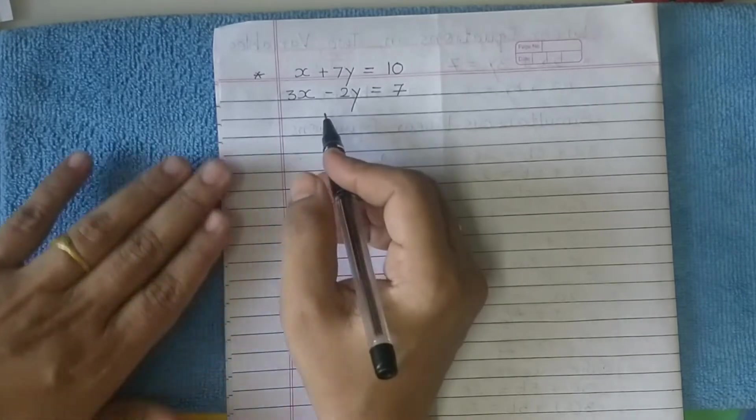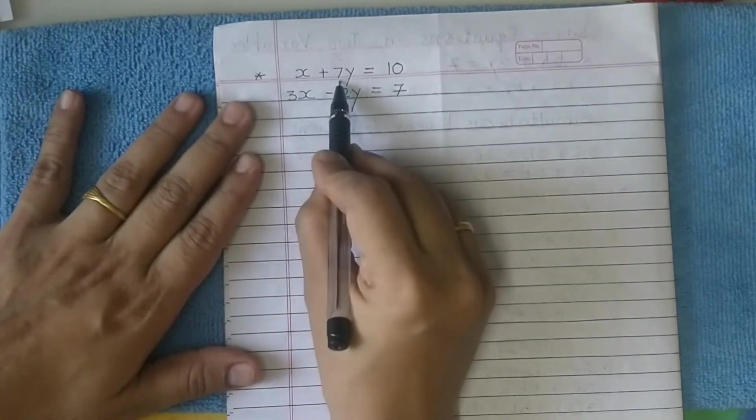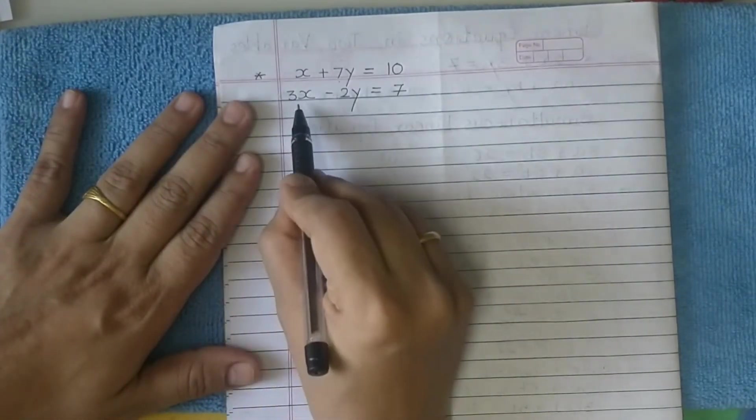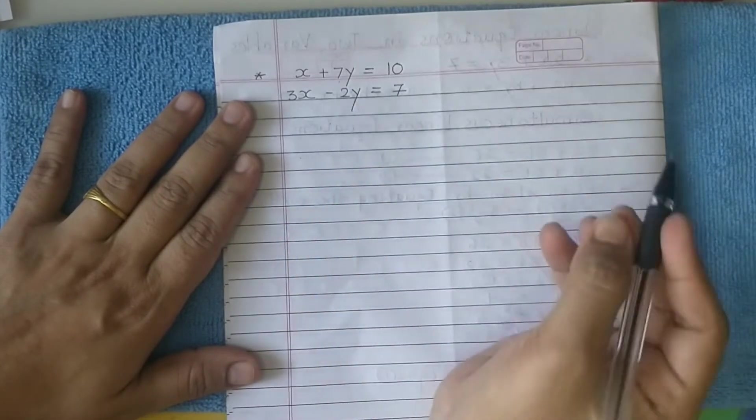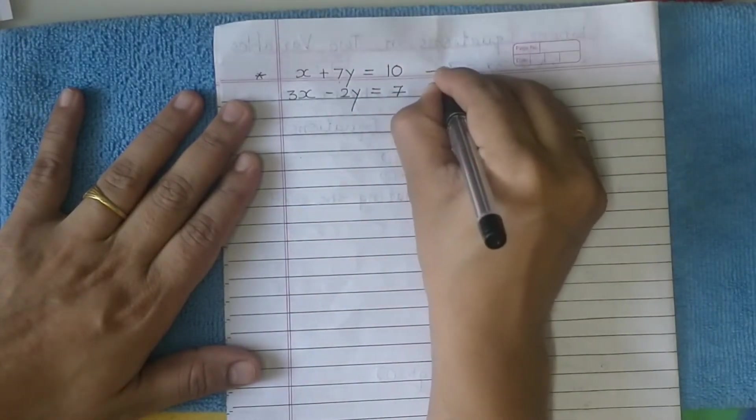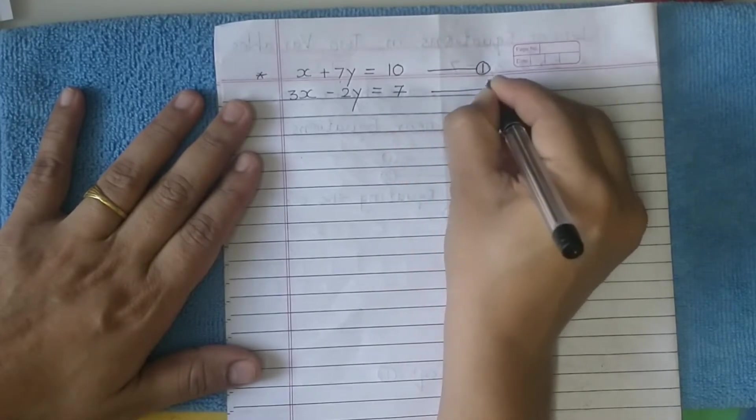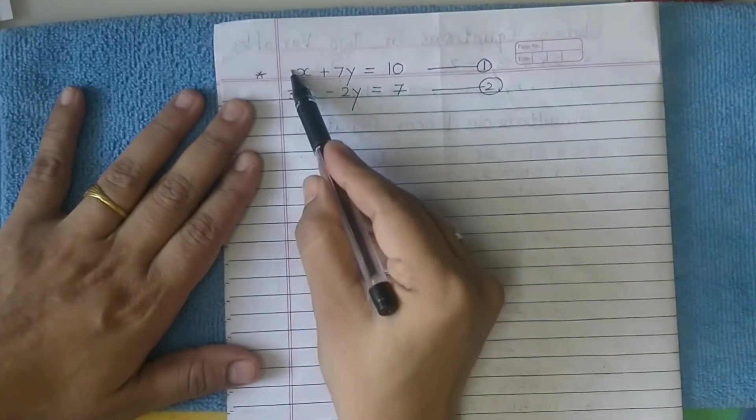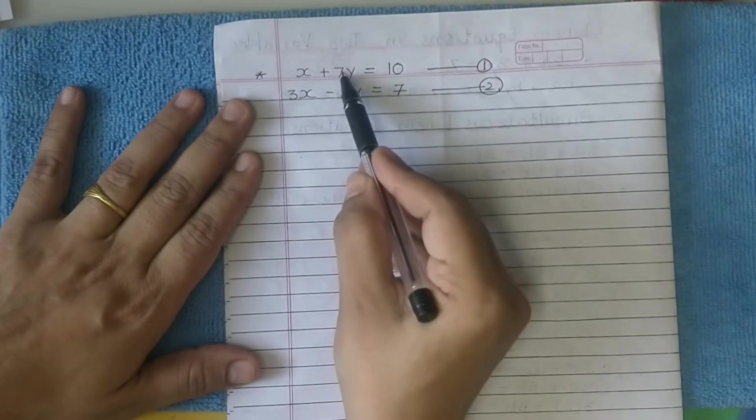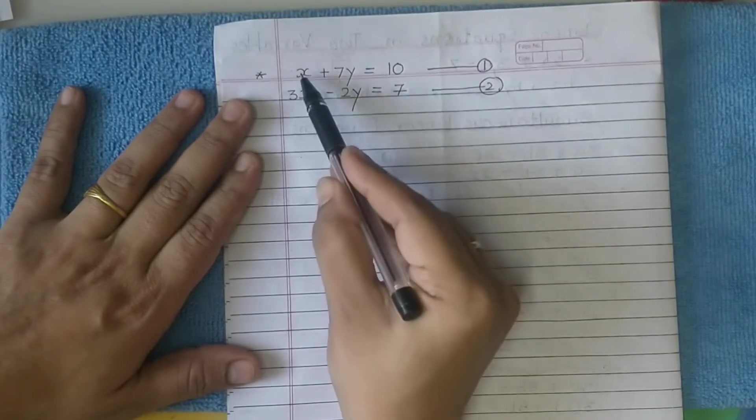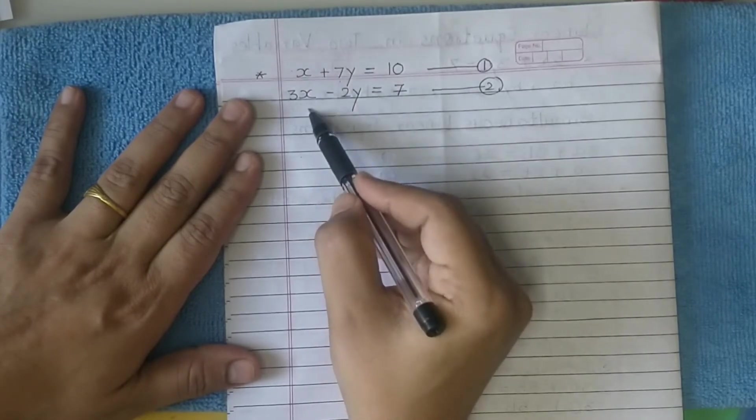Let's take one more example: x plus 7y equals 10, that's equation 1. 3x minus 2y equals 7, equation 2. Now observe the coefficients: 1 and 3 for x, 7 and minus 2 for y.